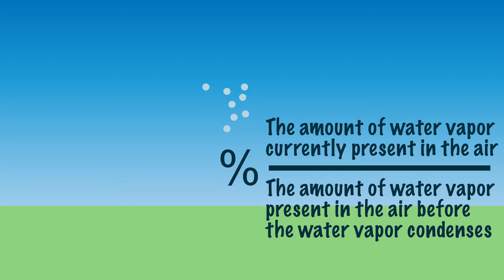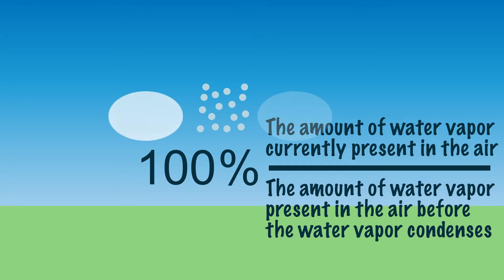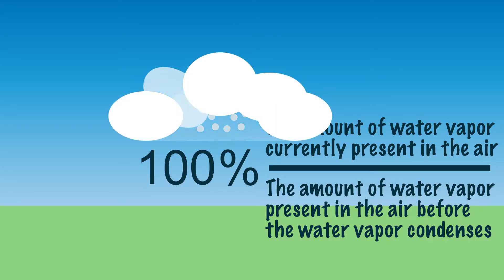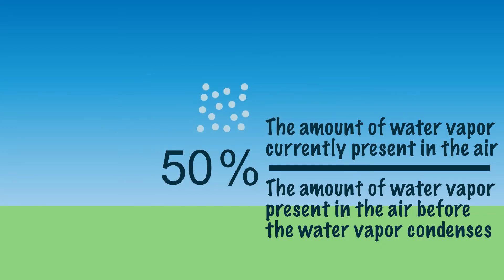If we add extra water vapor to the air at a relative humidity of 100%, then water vapor will also condense and form clouds. The relative humidity could also be 50%. At that moment, there is only half the amount of water vapor in the air compared to the amount of water vapor that can be present in the air.